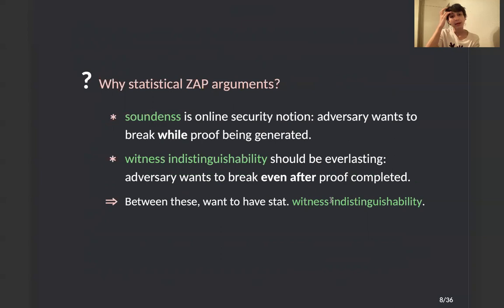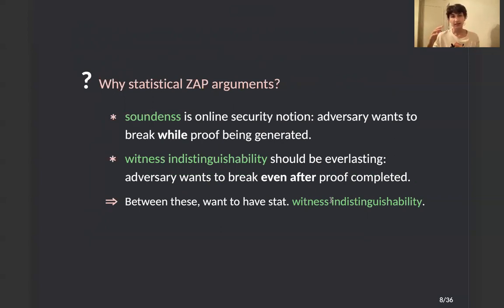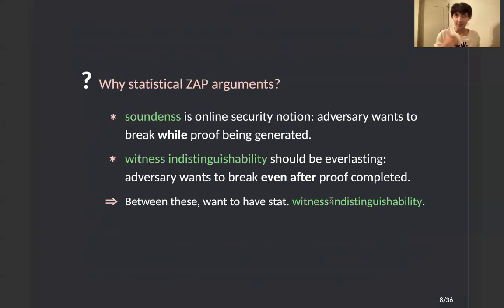The reason we care about statistical ZAP arguments is that soundness is essentially an online security notion — the adversary wants to break soundness while the proof is being generated, and after the proof is completed we no longer care about it. But witness indistinguishability is a property we want to be everlasting, because it prevents the proof from leaking information, and an adversary may want to break it even after the proof is completed. So between the two properties, we want witness indistinguishability to be statistical.